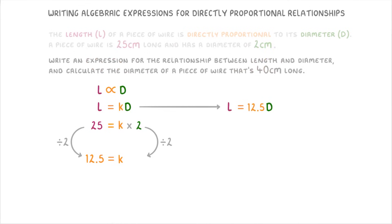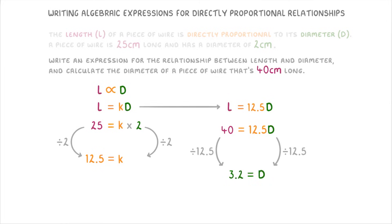Then moving on to this last part of the question, we can now use our equation to find the diameter of a 40cm piece of wire. So we plug in 40 in the place of L to get 40 equals 12.5D. And then divide both sides by 12.5 to find that 3.2 equals D. So the 40cm wire would have a diameter of 3.2cm.